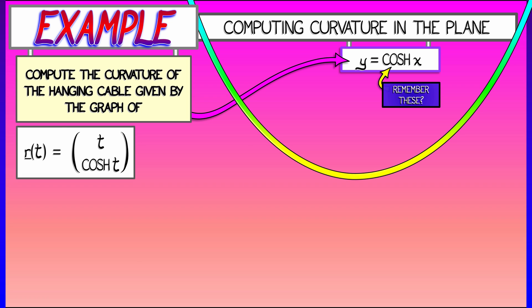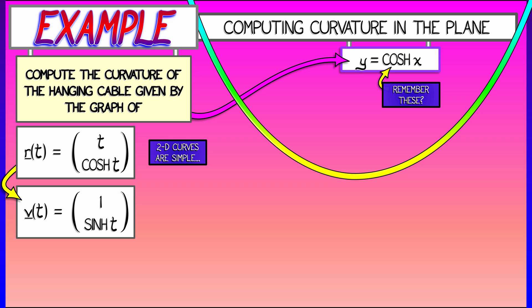If we parameterize this curve in the simplest way possible, using t for the x coordinate and cosh(t) for the y coordinate, then it's easy to take derivatives to get velocity and acceleration. Remembering that the derivative of cosh is sinh, and the derivative of sinh is cosh.